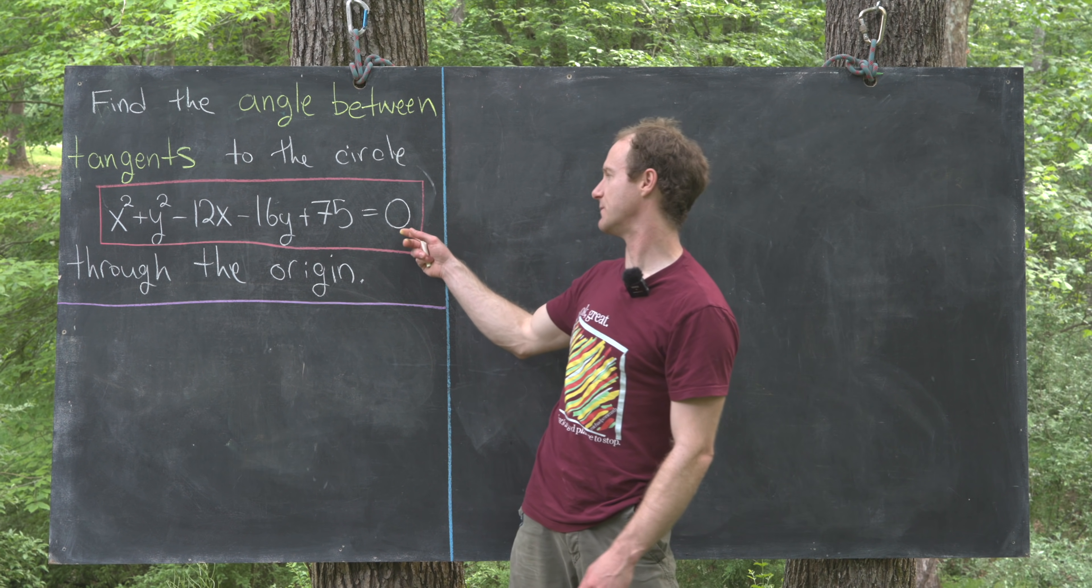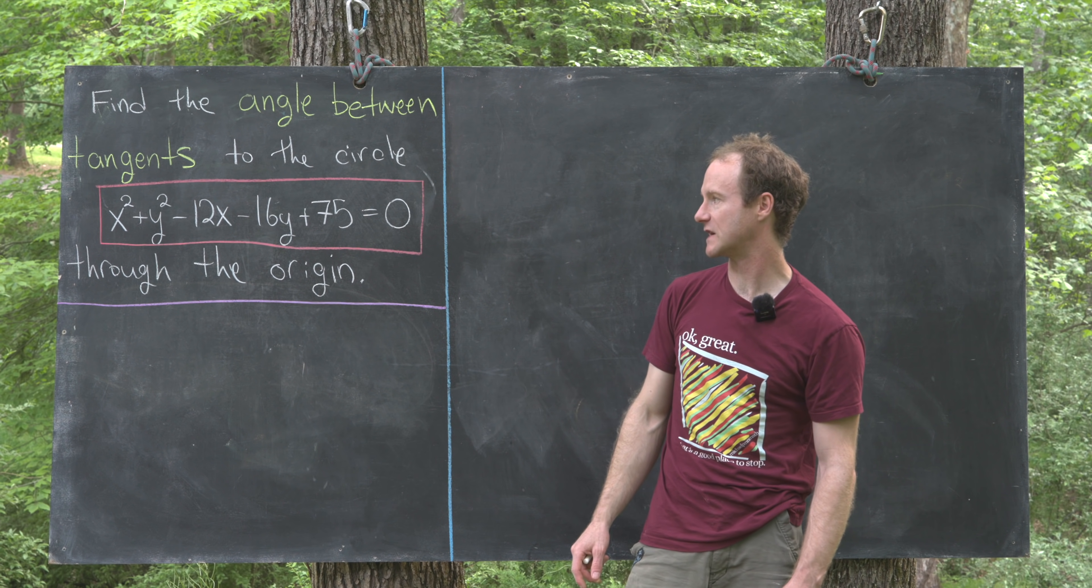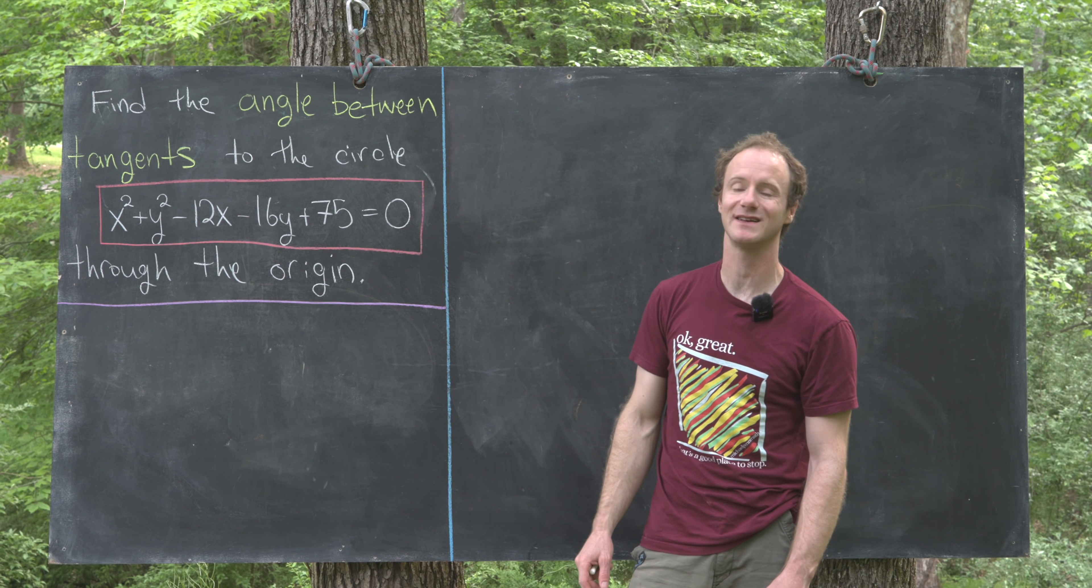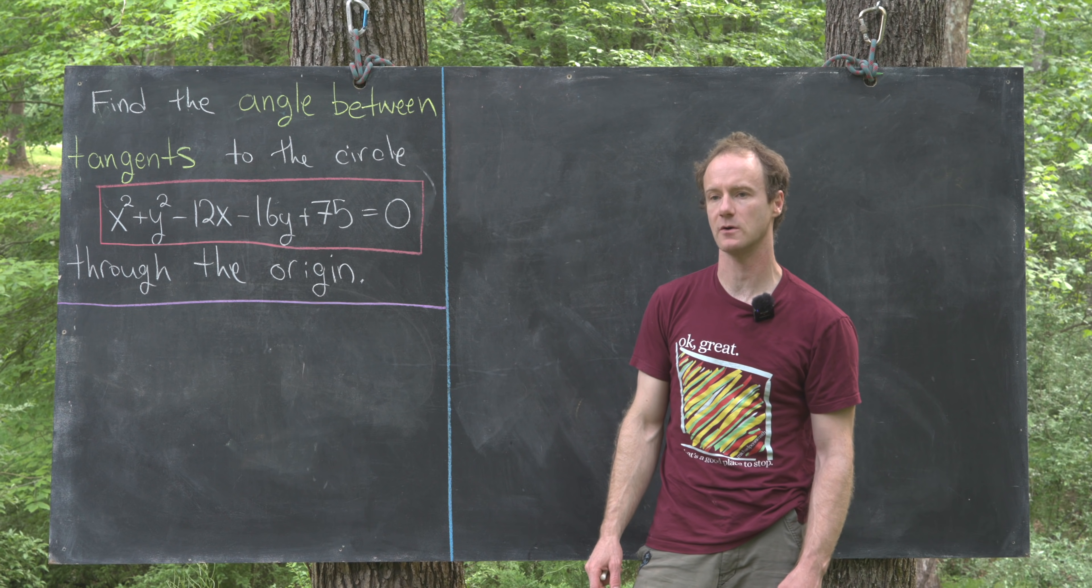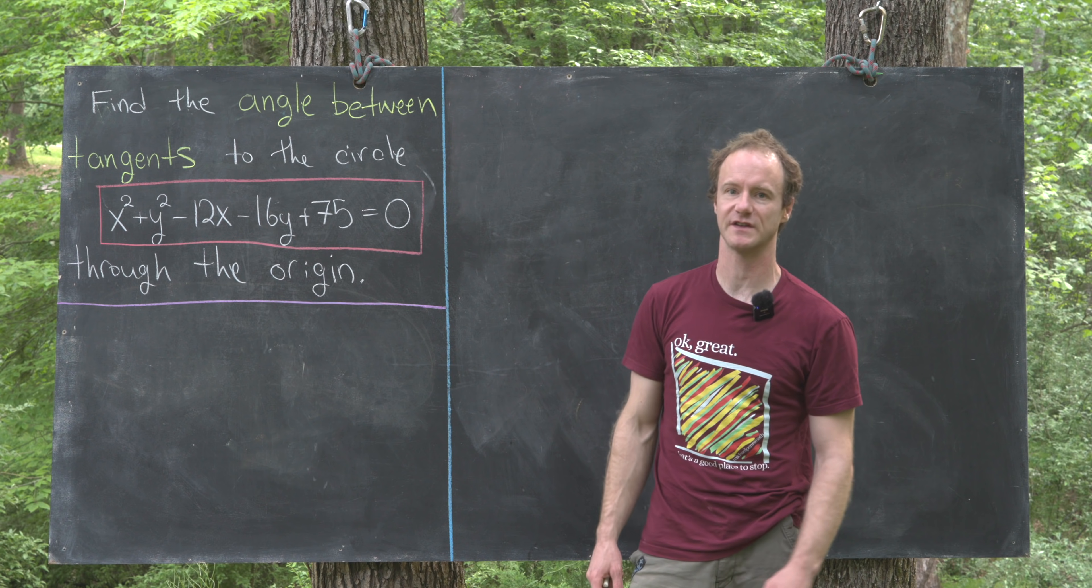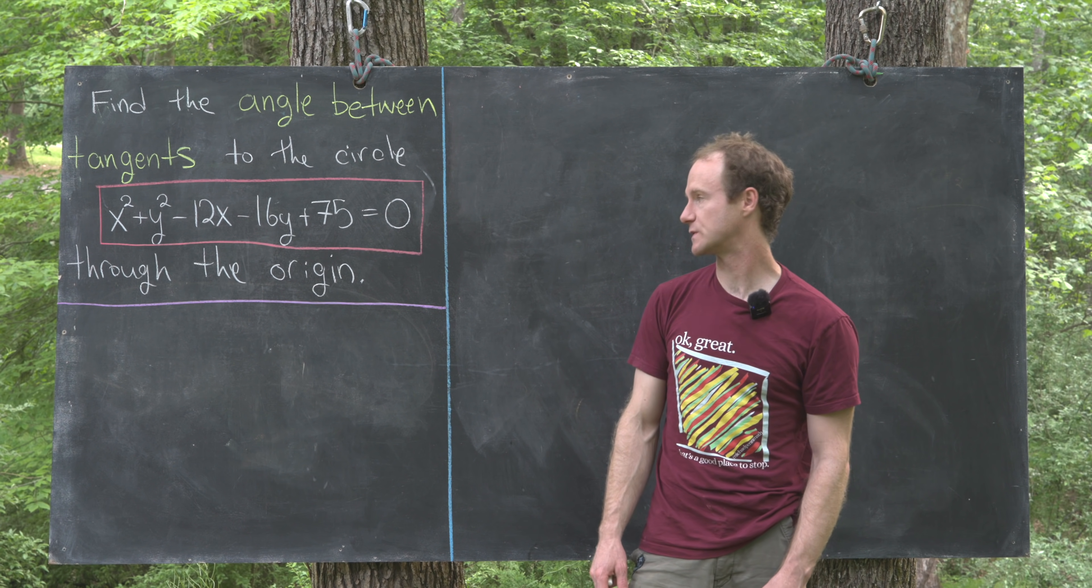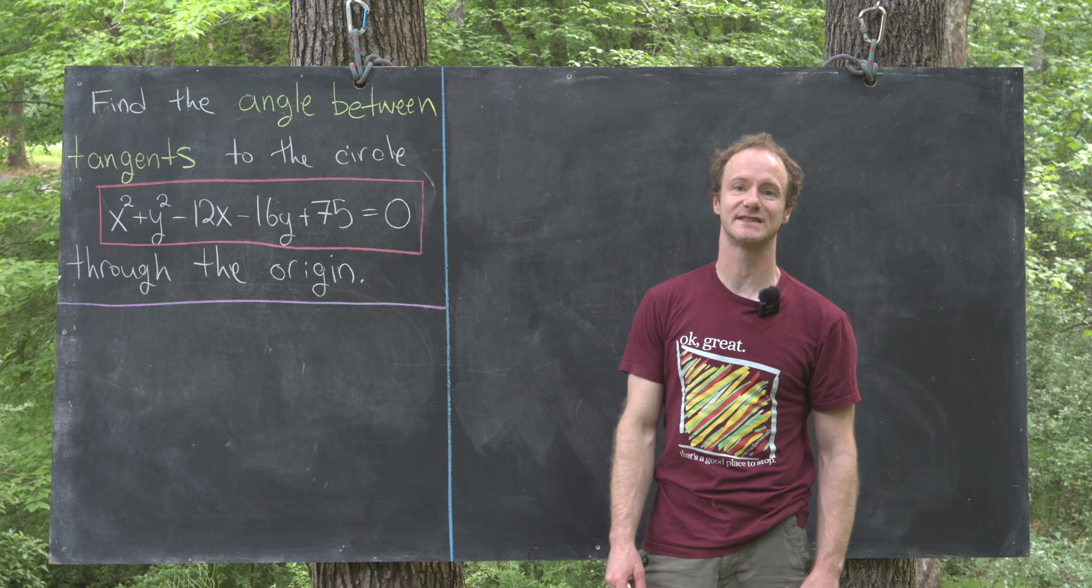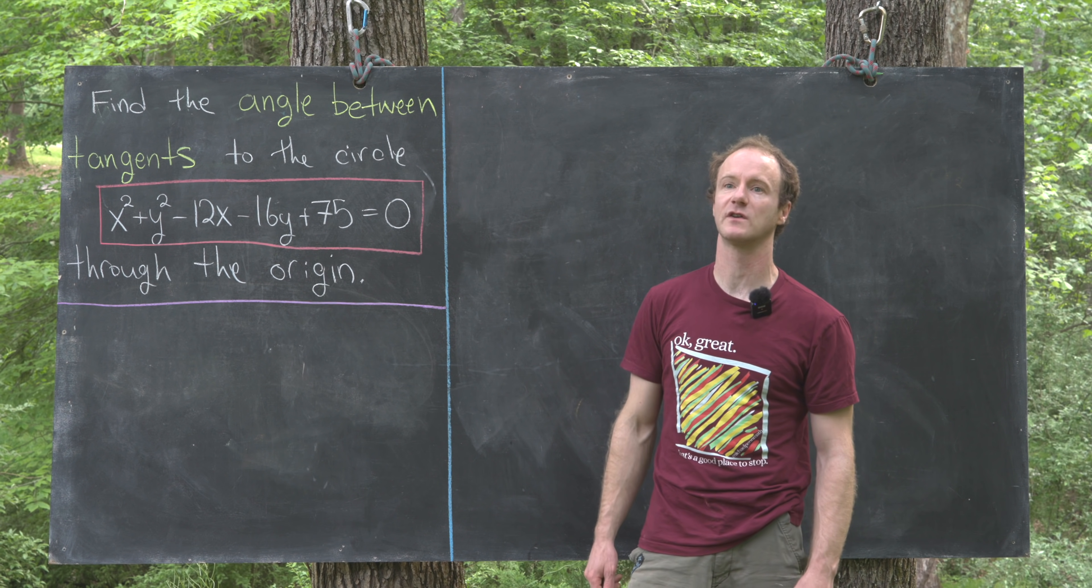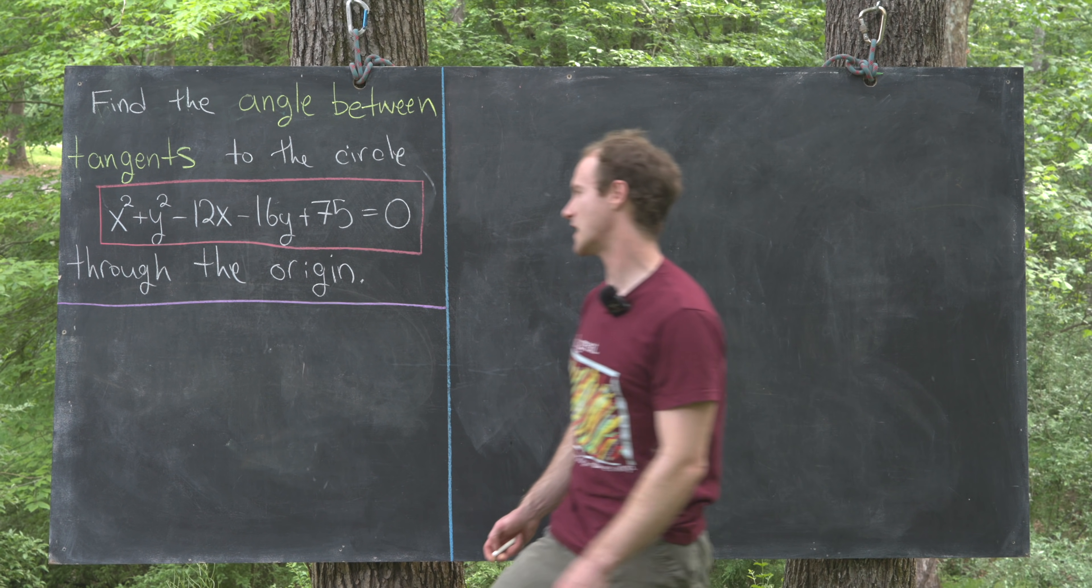This circle is defined by this quadratic in two variables: x squared plus y squared minus 12x minus 16y plus 75 equals zero. It's not super necessary to get an idea where this circle lives in the plane and draw a picture, but I think it motivates what's going on here. I want to put this in the standard form, which is going to involve completing the square in the x part and the y part.